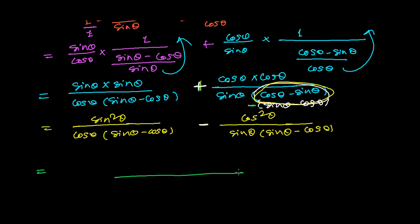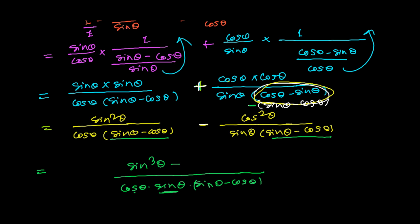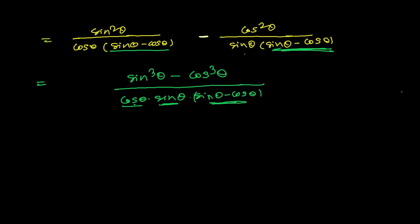When we take the LCM, the denominator becomes cos theta times sine theta times (sine theta minus cos theta), since both denominators now share (sine theta minus cos theta). After combining, we get sine cubed theta minus cos cubed theta, all over cos theta times sine theta times (sine theta minus cos theta).